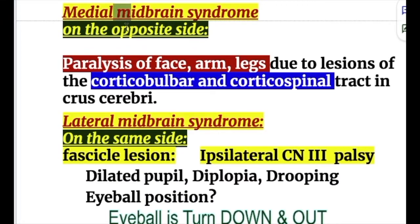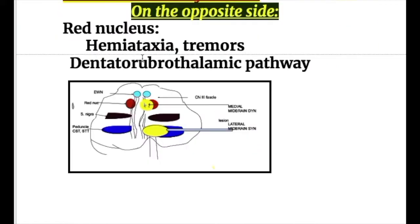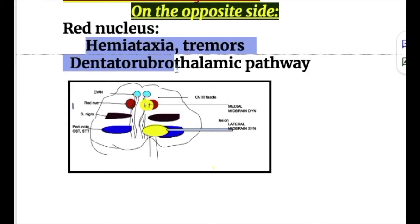On the contralateral side, the medial midbrain syndrome causes paralysis of the face, arm, and leg due to involvement of the corticobulbar and corticospinal tract in the crus cerebri. These features are contralateral because the fibers cross over at the pyramids in the medulla. The lateral midbrain syndrome on the opposite side involves the red nucleus, causing hemiataxia and tremors due to involvement of the dentato-rubrothalamic pathway.